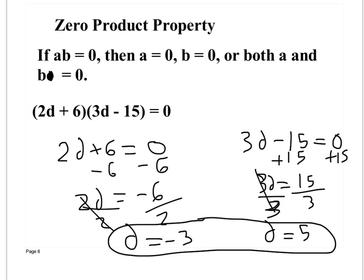Because if d was equal to -3, this would become 0, which it doesn't matter what's over here, because that times 0 is 0. If d was 5, this would become 0, because 15 minus 15 is 0. It doesn't matter what this becomes, because anything times 0 is 0. Does that make sense?